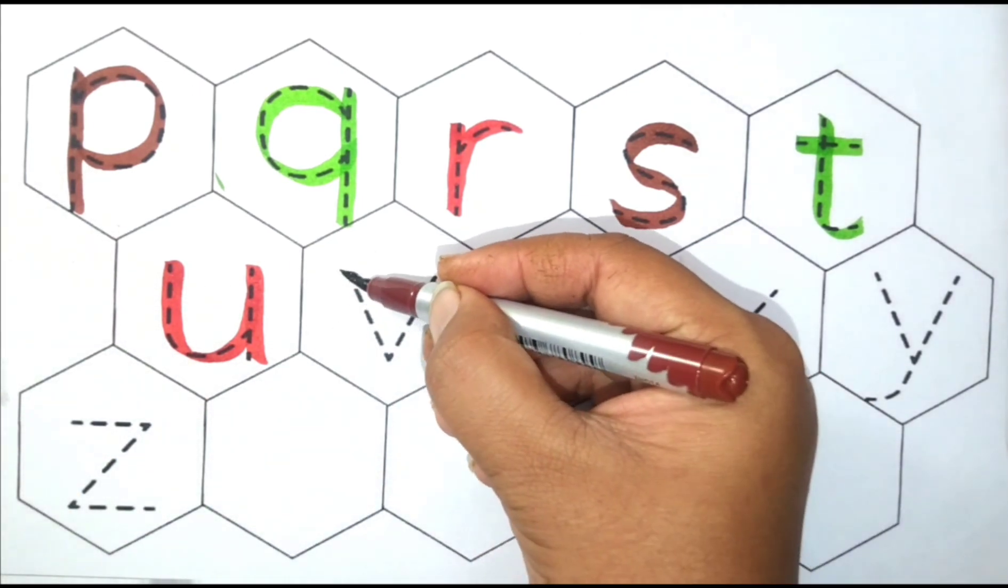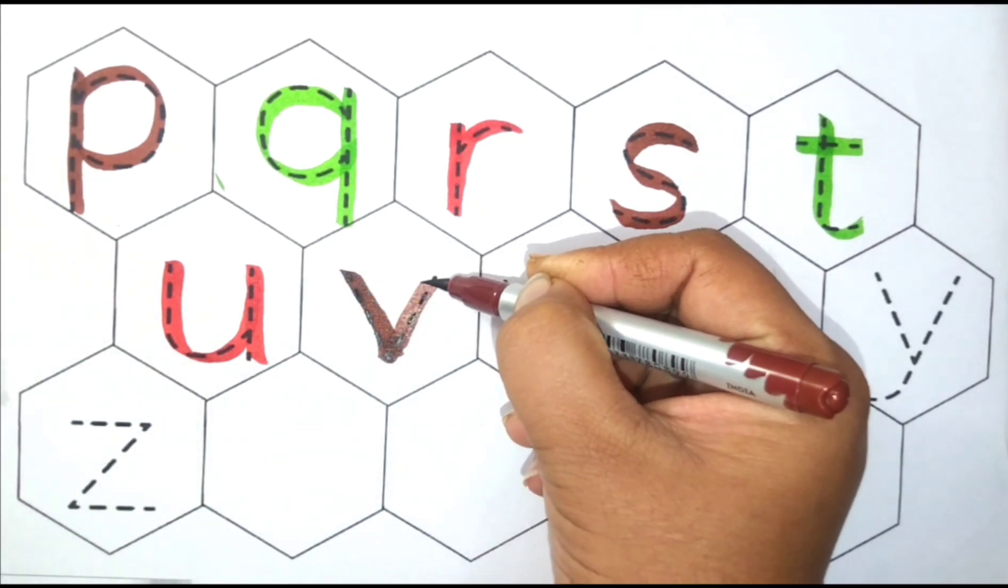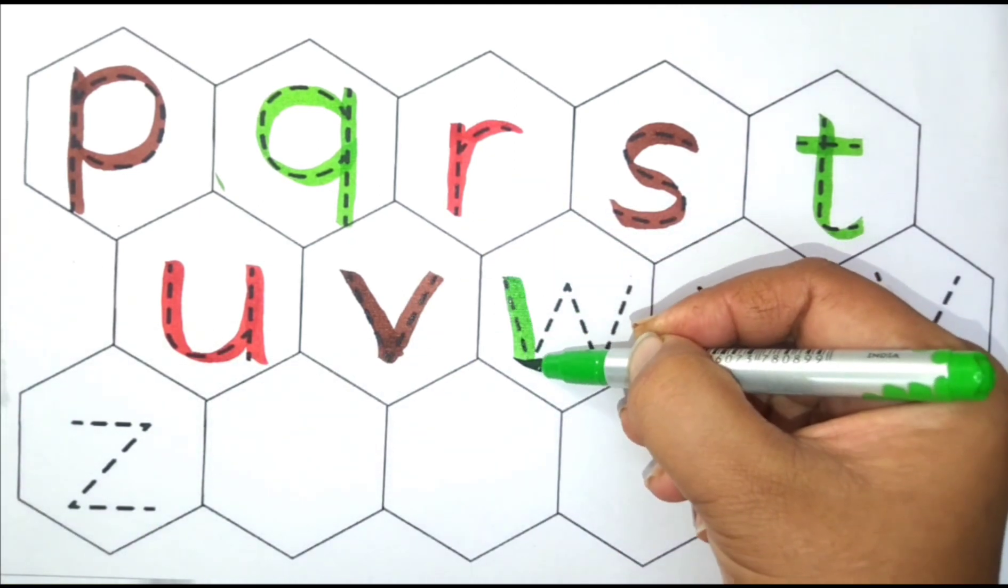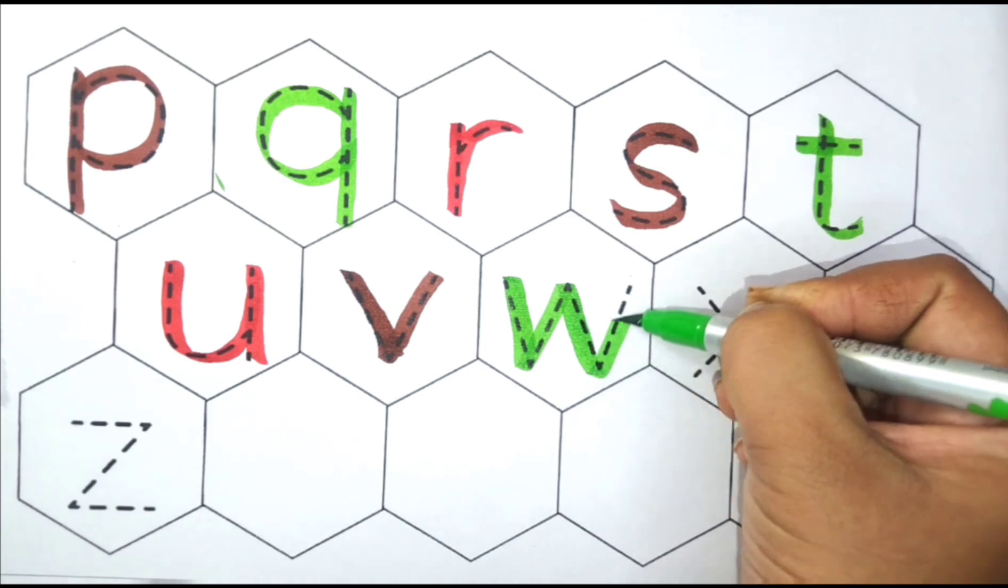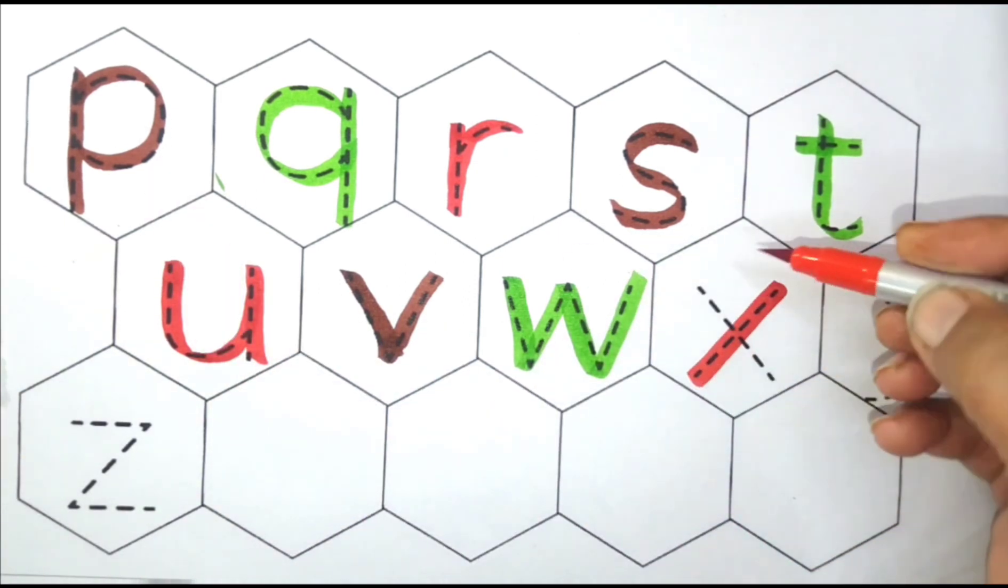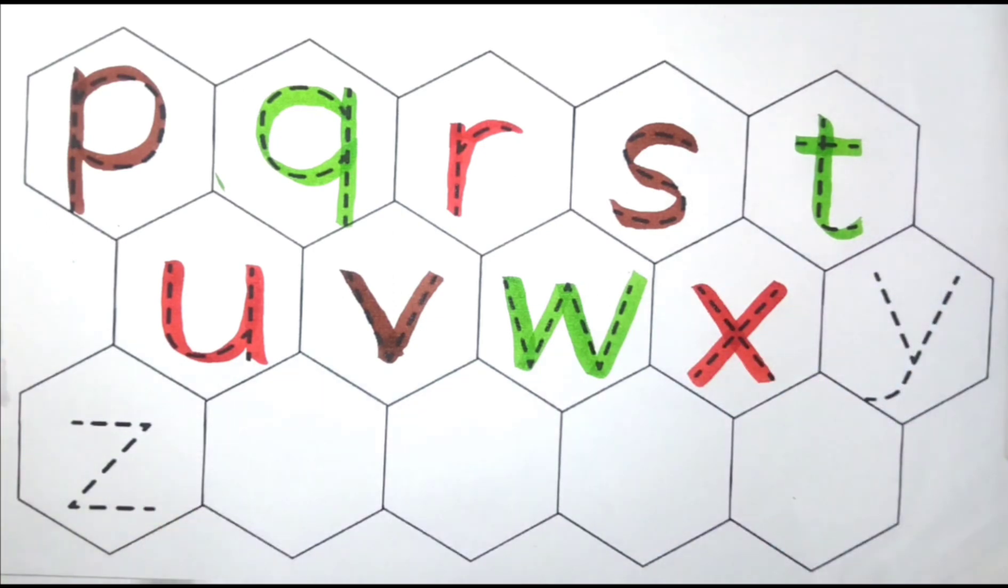Brown color, V, V for Village. Green color, W, W for Watermelon. Red color, X, X for X-Ray. Brown color.